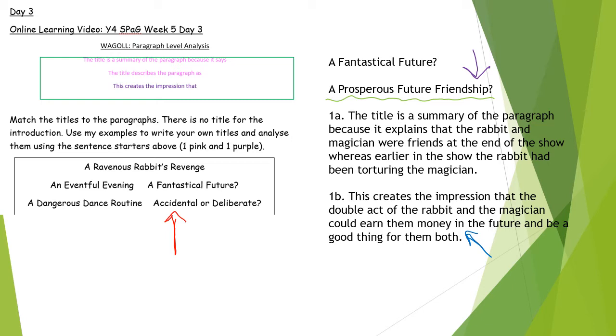So you have a couple of steps. For each paragraph, once you have matched the titles to the paragraphs, you need to write your own version. Then you need to use a pink sentence to explain why it's relevant to the paragraph, and then the purple sentence to explain any adjectives and explain it a bit further, talking about the ideas of the reader.